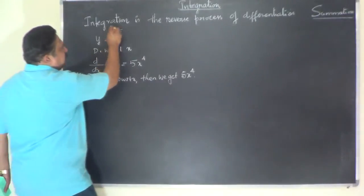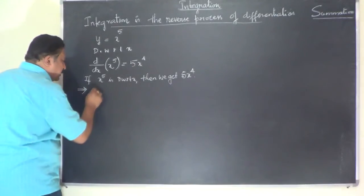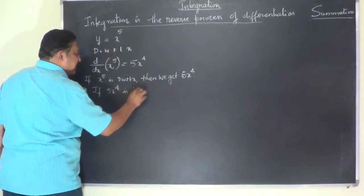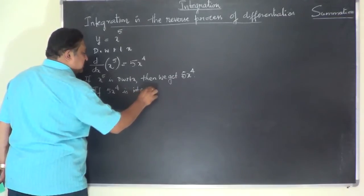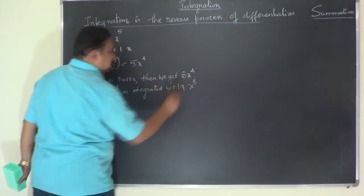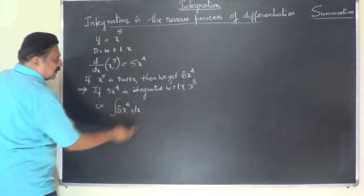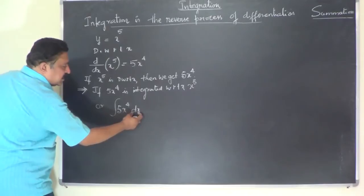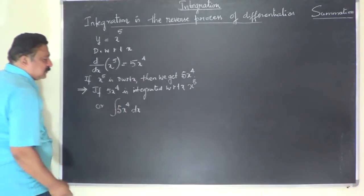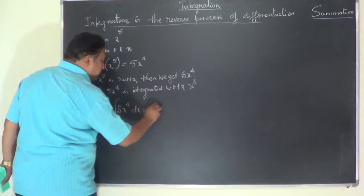According to the definition of integration, which says integration is the reverse of differentiation, the converse is: if 5x to the power of 4 is integrated with respect to x, then we should get x to the power of 5. Symbolically, integral 5x⁴ dx equals x⁵. Once you write the integral symbol, you must always write dx.